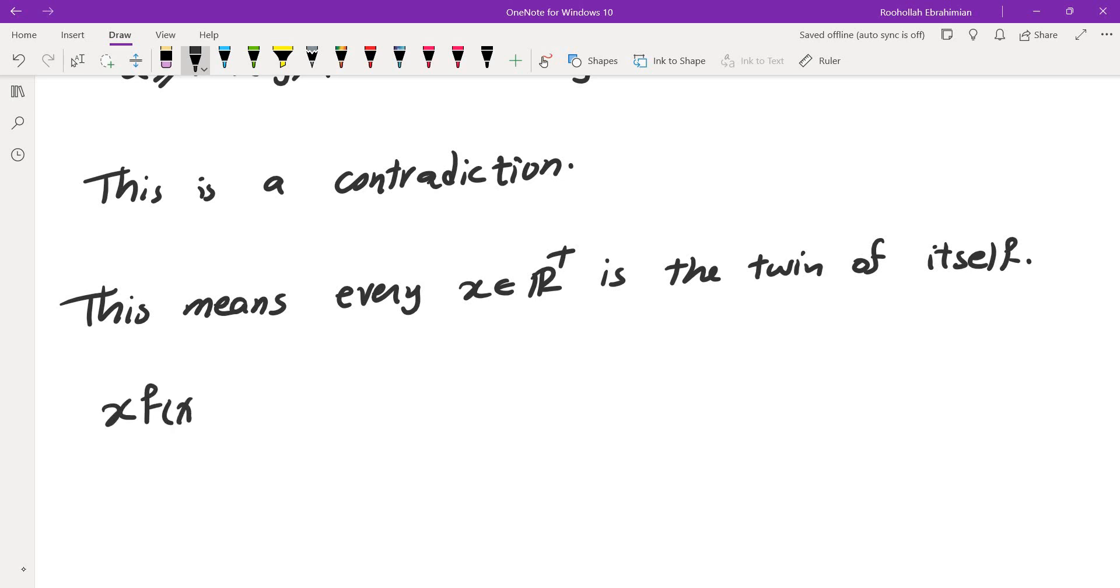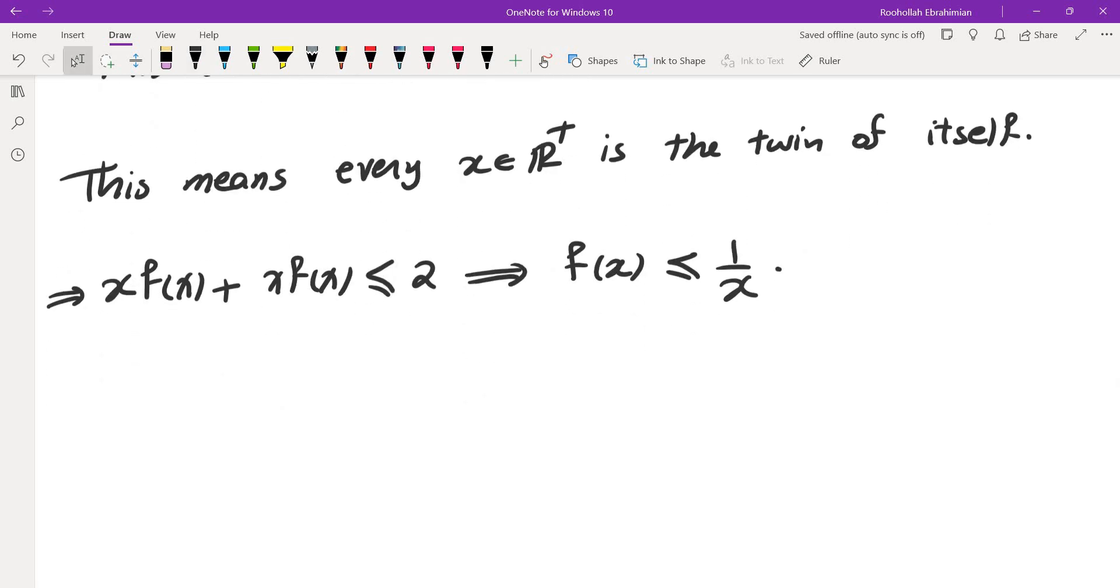So what does that mean? It means xf(x) plus xf(x) is less than or equal to 2, which means f(x) is always less than or equal to 1 over x. We haven't shown that it is equal to 1 over x, though.